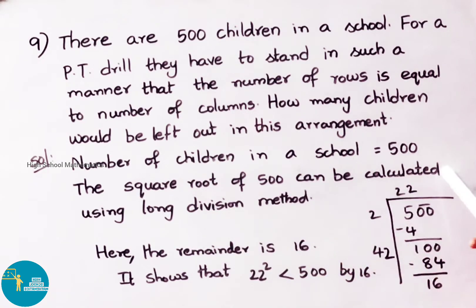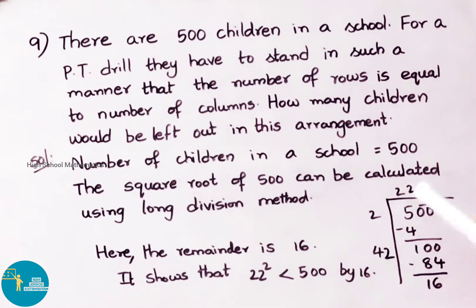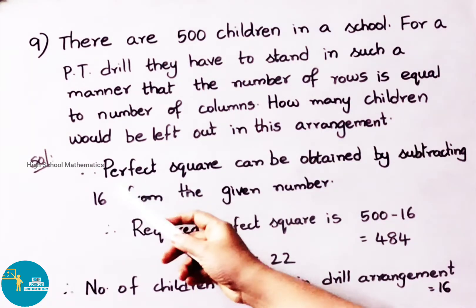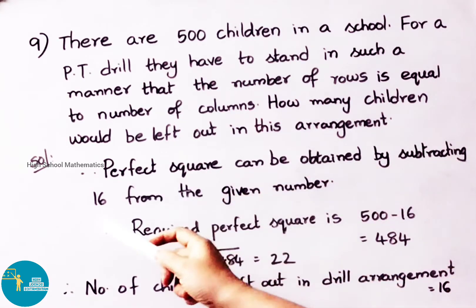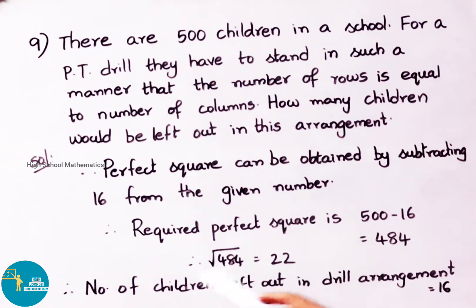Now let us find the square root of 500 using the long division method. We have written 500 in pairs. We take 2 squared that is 4, so 5 minus 4 is 1. Bring down the next pair, double zero, so the number is 100. The double value of 2 is 4, we write 42 and multiply by 2, so 42 into 2 is 84. Then 100 minus 84 gives a remainder of 16. This shows that 22 squared is less than 500 by 16. Therefore, a perfect square can be obtained by subtracting 16 from 500. The required perfect square is 500 minus 16, that is 484. The square root of 484 is 22. Therefore, the number of children left out in the drill arrangement is 16.